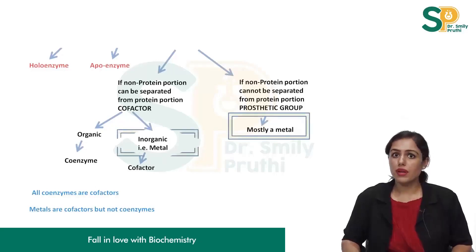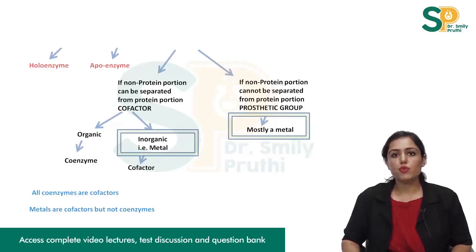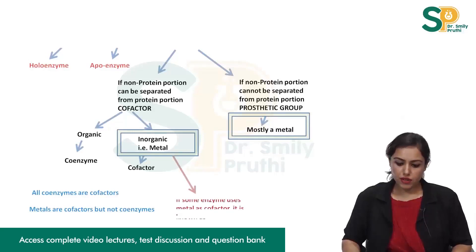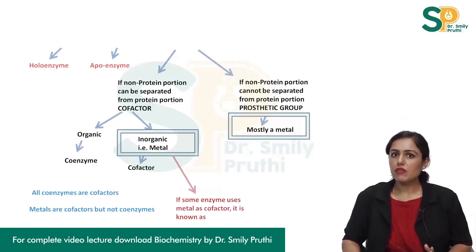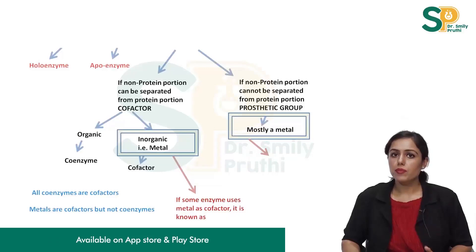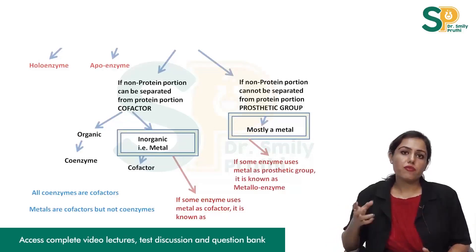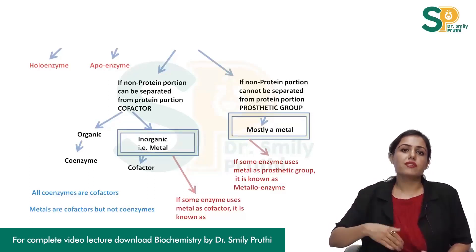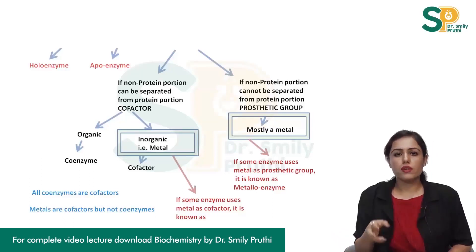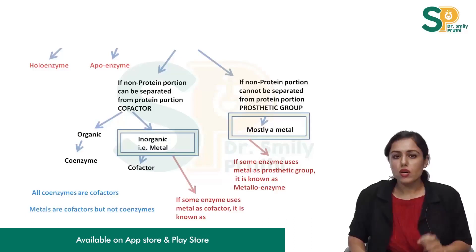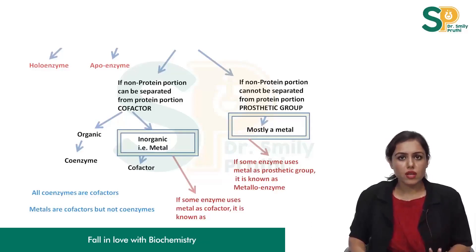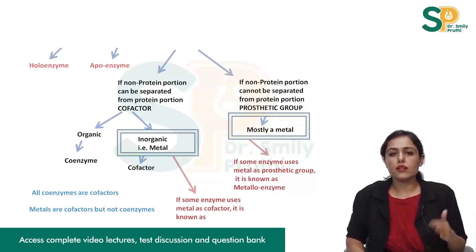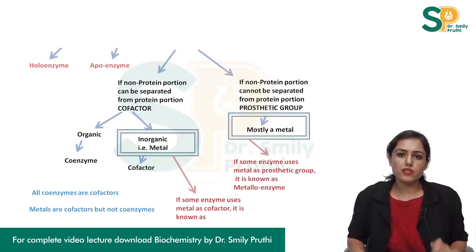Metals can be prosthetic group, metals can be cofactor. If some enzyme is using metal as cofactor, then it is known as metal activated enzyme. If some enzyme is using metal as prosthetic group, then it is known as metalloenzyme. Metal activated enzyme means only if the metal is present then the enzyme gets activated — if metal is not present, it is not activated, meaning the metal can be separated; it is a cofactor. But when the term metalloenzyme is used, the metal is always there with the enzyme and cannot be separated — it is a prosthetic group.